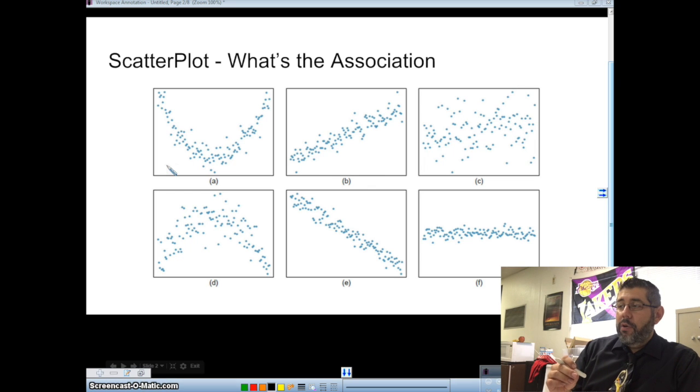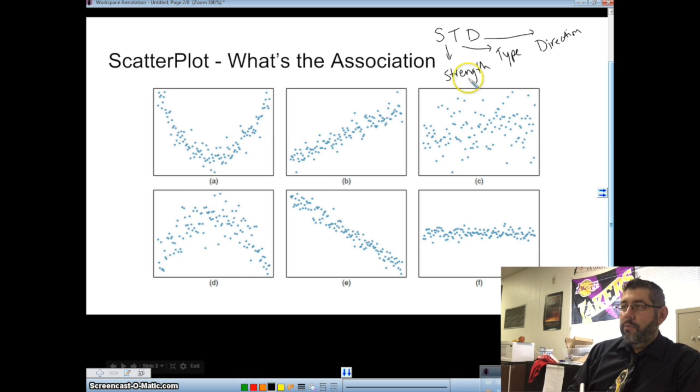We have two quantitative variables. One on our x-axis, one on the y-axis. One is called our response variable, the other is called our explanatory variable. So one explains the other. When we're talking about describing an association between two variables, we want to talk about STDs. S stands for strength, T stands for type, and D stands for direction.